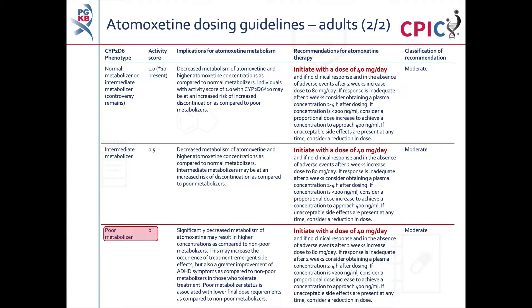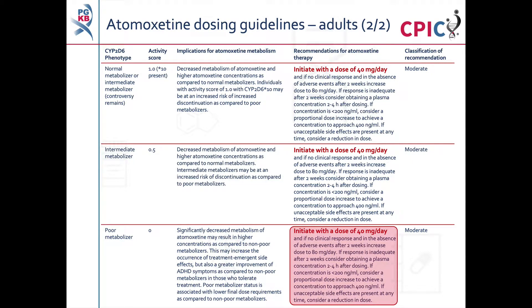Patients with a CYP2D6 poor metabolizer phenotype will have significantly decreased metabolism of atomoxetine. This may lead to an increase in side effects, but can also lead to a greater improvement in ADHD symptoms compared to other metabolizer phenotypes. These patients should begin atomoxetine therapy at a dose of 40 mg per day. If there are no side effects or clinical response after 2 weeks of treatment, obtaining a peak plasma concentration 2-4 hours after administration should be considered. If the peak plasma concentration is less than 200 ng per mL, a dose increase should be considered. A dose reduction should be considered if a patient develops unacceptable side effects. This is a moderate recommendation.